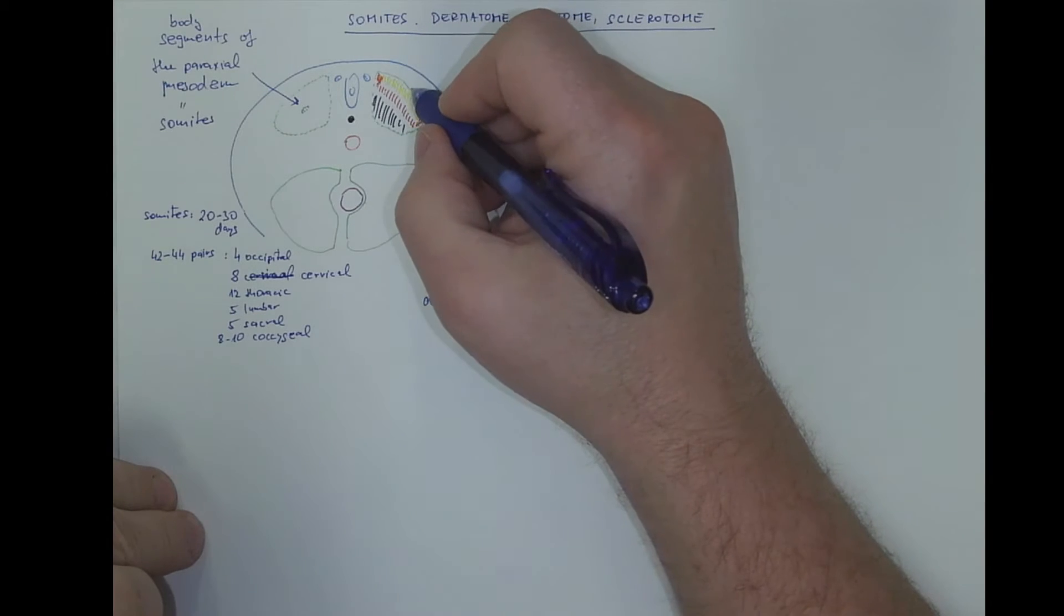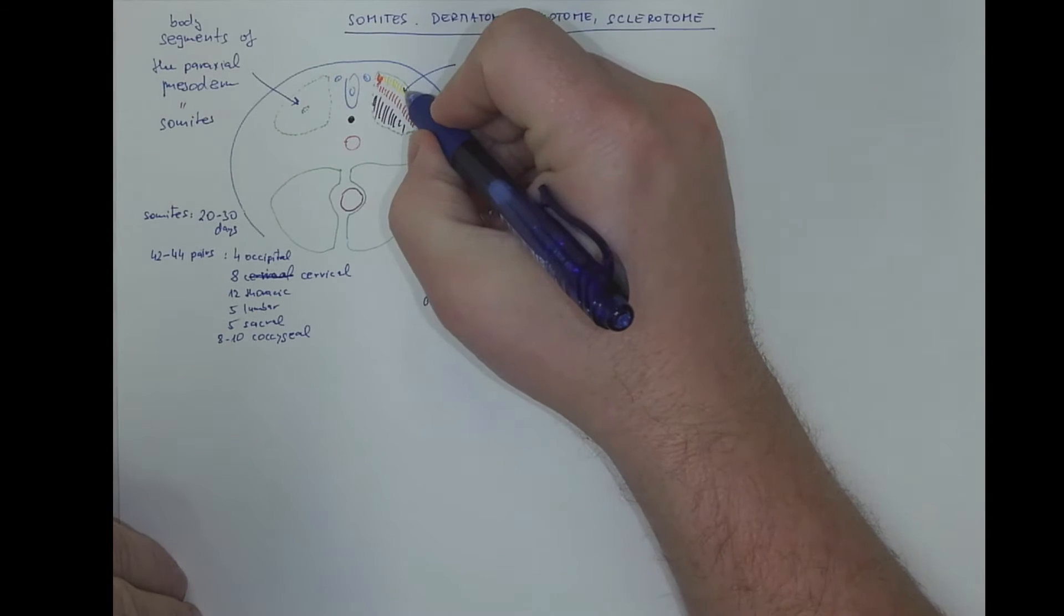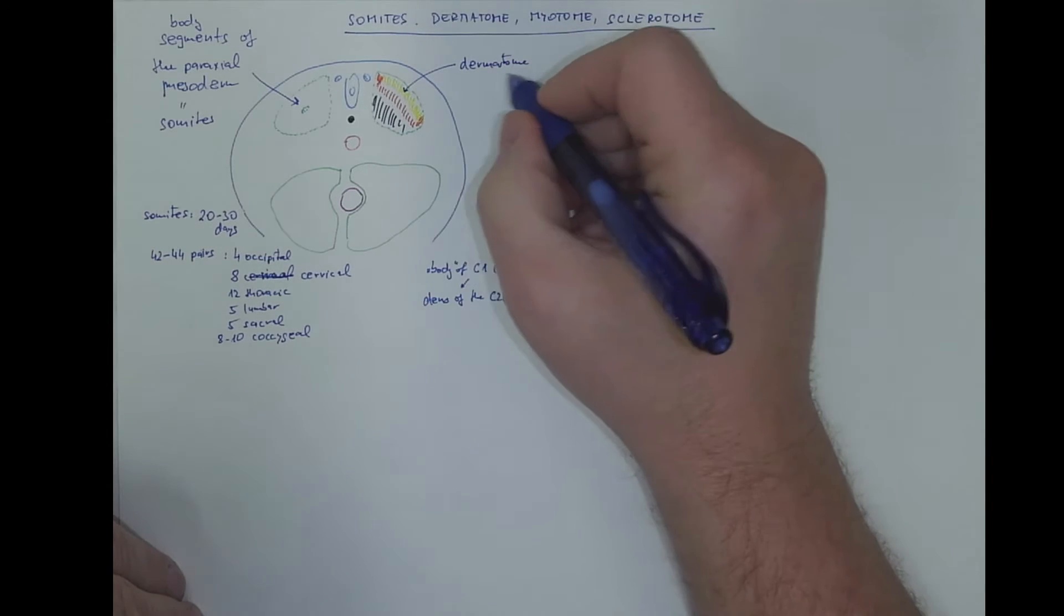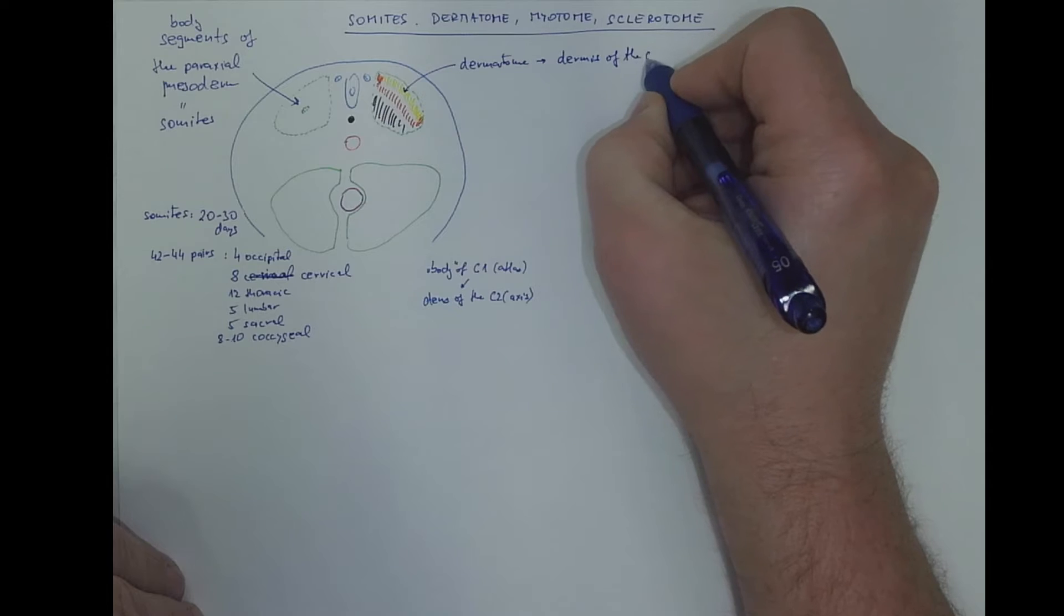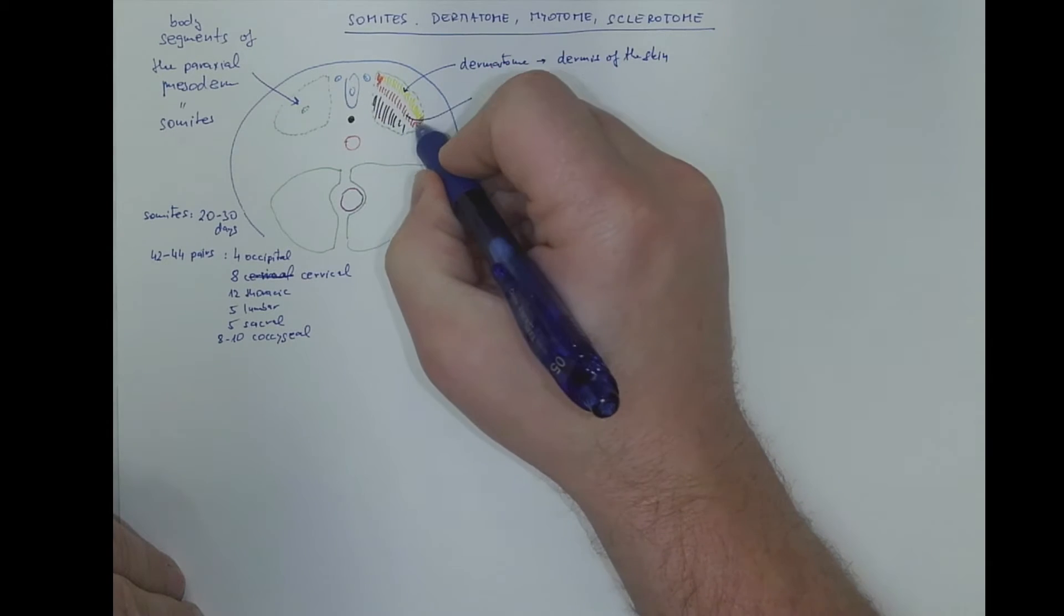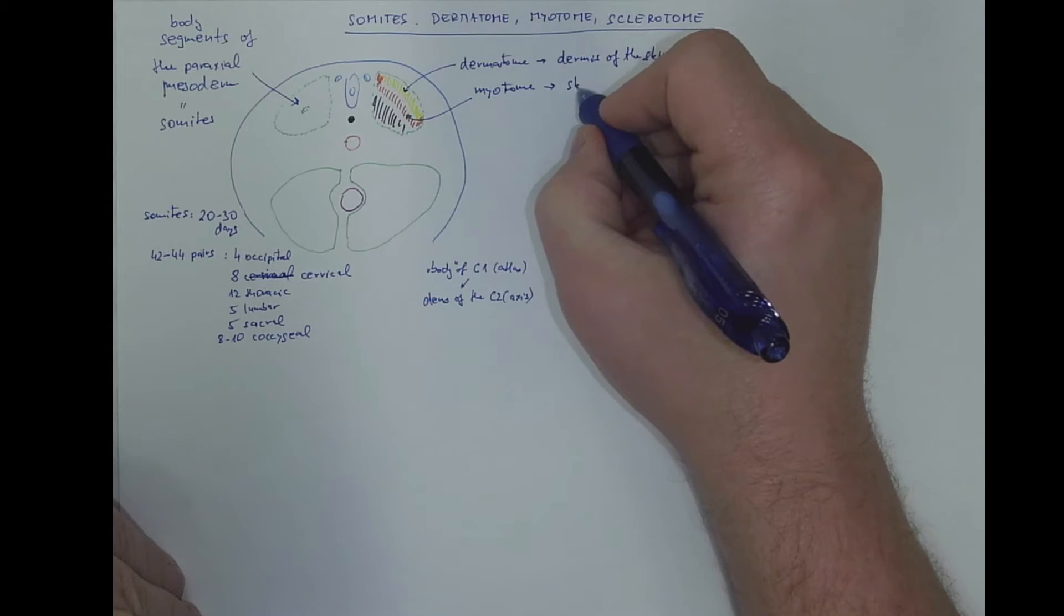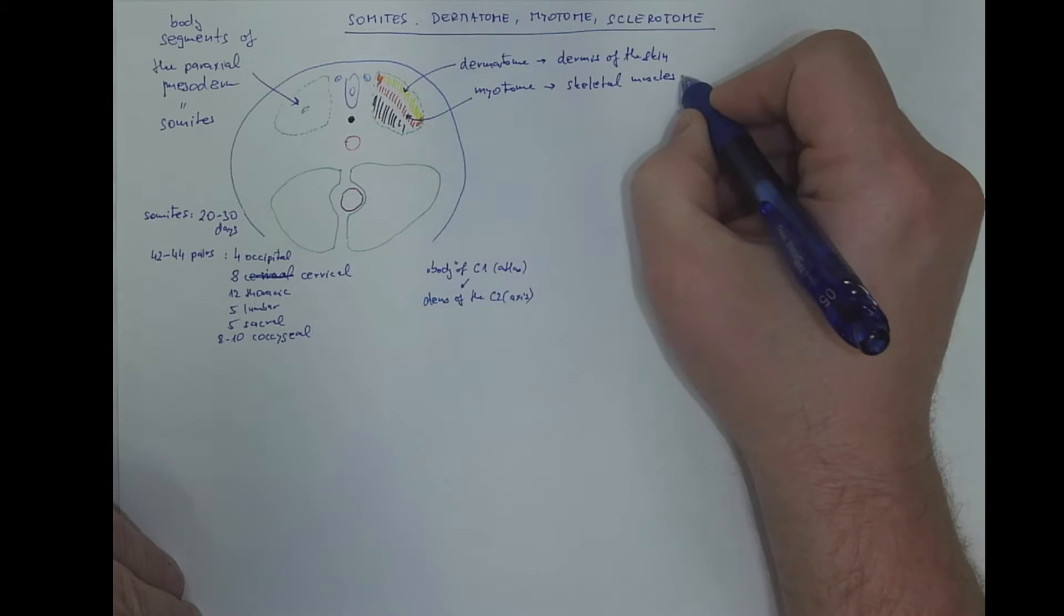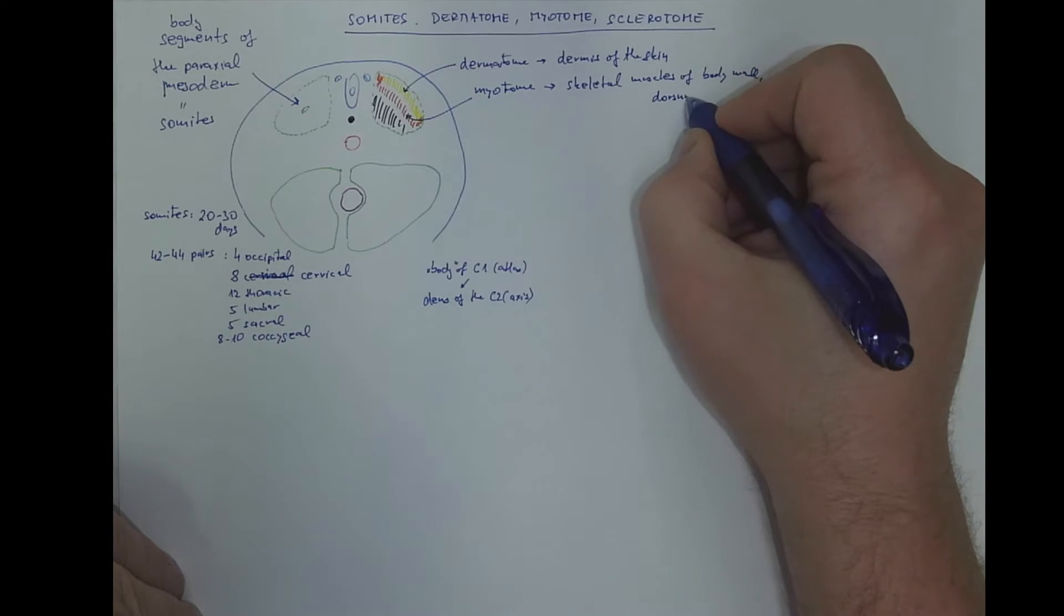Let's go to these cell populations with diverse fate. This is the dermatome. As the name suggests, this cell population will differentiate into the dermis of the skin. The reddish one is the population called myotome. This will become the skeletal muscles of the body wall, of the dorsum, of the limbs.